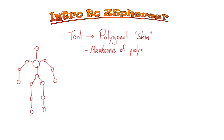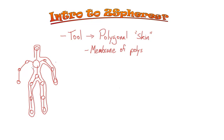When ZBrush sees this network, it can then use it to create a polygonal skin — a membrane of polygons that goes around this hierarchy, giving you a basic rudimentary model. You have quite a bit of control: you can move the Z-Spheres, scale them, rotate them, and use combinations of many different spheres to get a variety of effects in your base mesh.